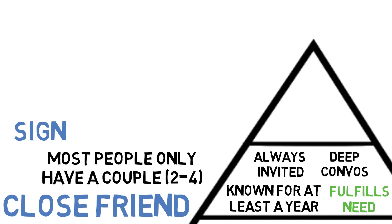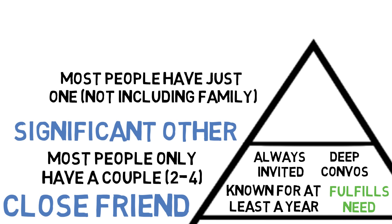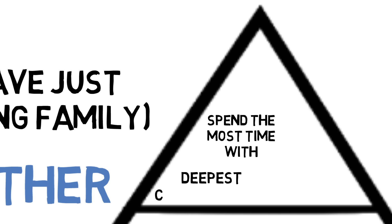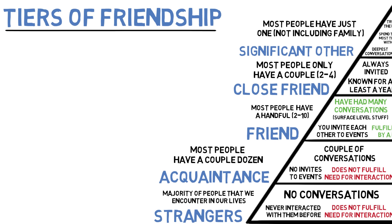Very few people in our lives will make it into the last and final tier: that of the significant other. With the exception of our families, most people only have just one significant other. Significant others are the people that we value the most in our lives. They are the ones that we spend the most time with, have the deepest conversations with, and trust the most. These are the first people we think of when we host any sort of event, and for the most part, these are people we share a romantic interest with — somebody like a girlfriend or a spouse. Developing a romantic relationship is a bit different from a typical friendship and would probably require its own course, but what you learn here will absolutely play a huge role in getting to this final tier.